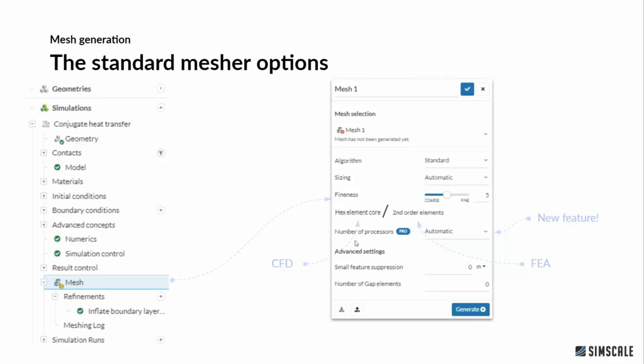A recent new feature in SimScale's mesh generation: community users can now automatically have the number of processors selected, based on the complexity of the geometry and fineness setting, so you don't have to worry about selecting the right amount of processors. For pro users, you can still manually access and set up to 96 processors for the meshing process.